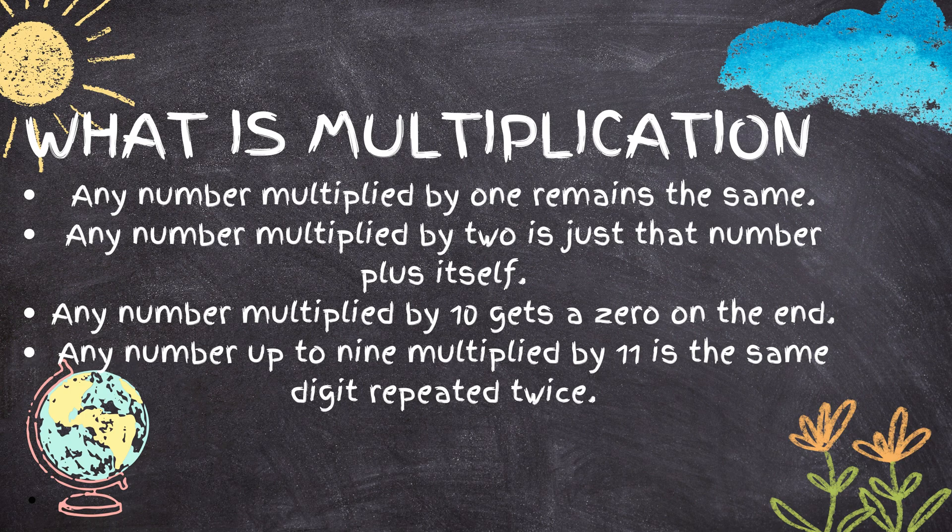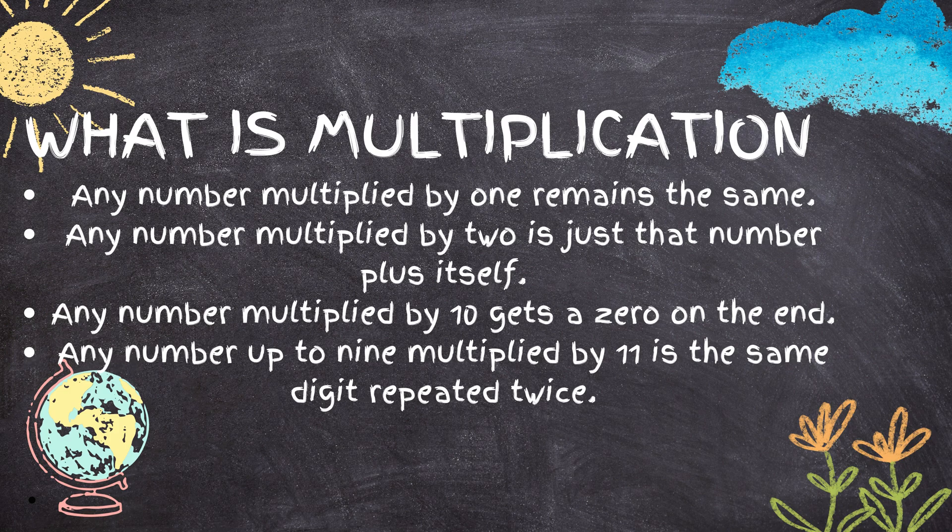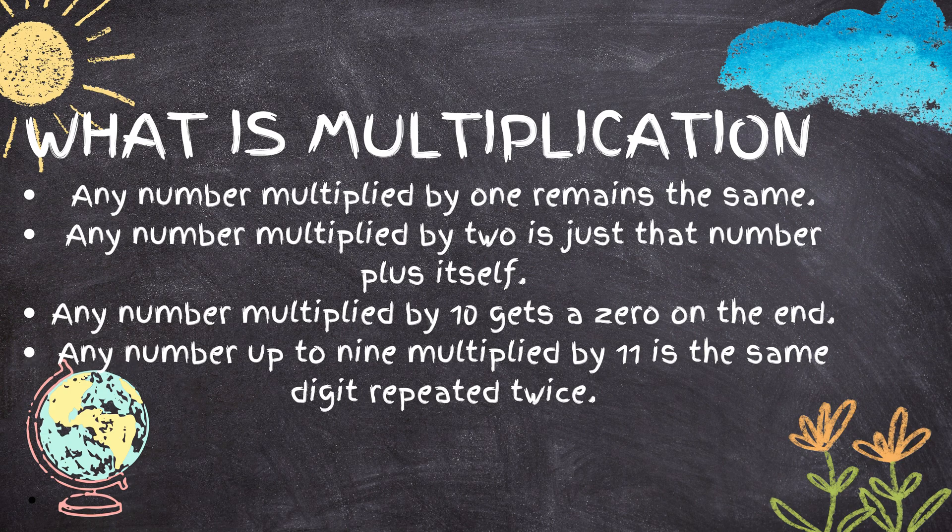Any number up to 9 multiplied by 11 is the same digit repeated twice. 2 times 11 is 22, 9 times 11 is 99, 8 times 11 is 88, 1 times 11 is 11.